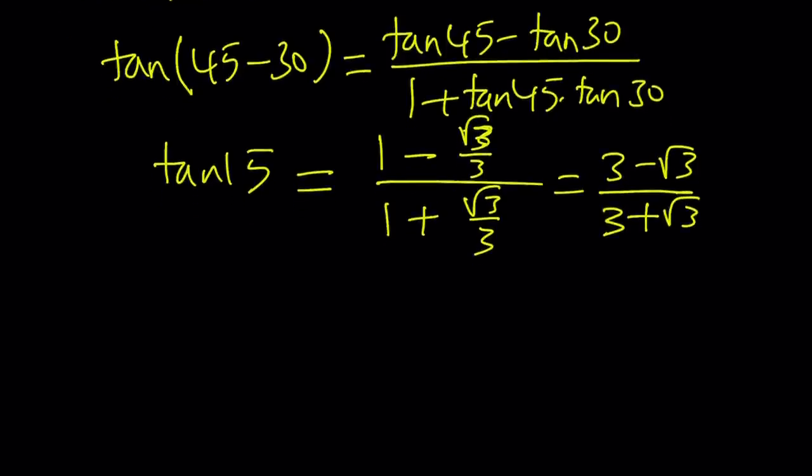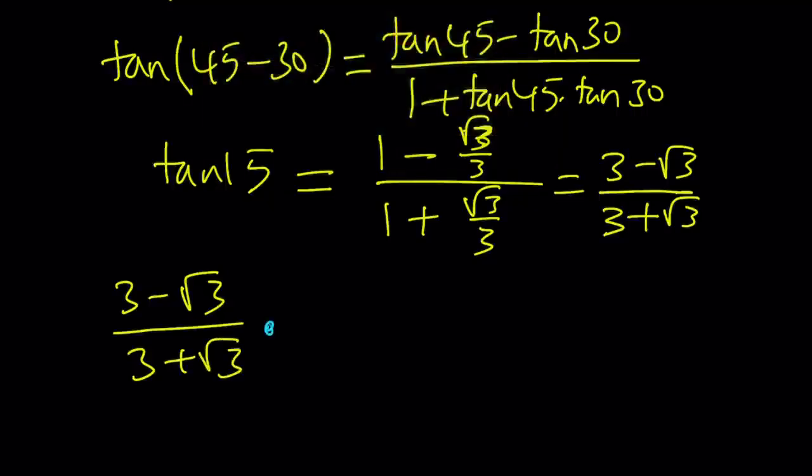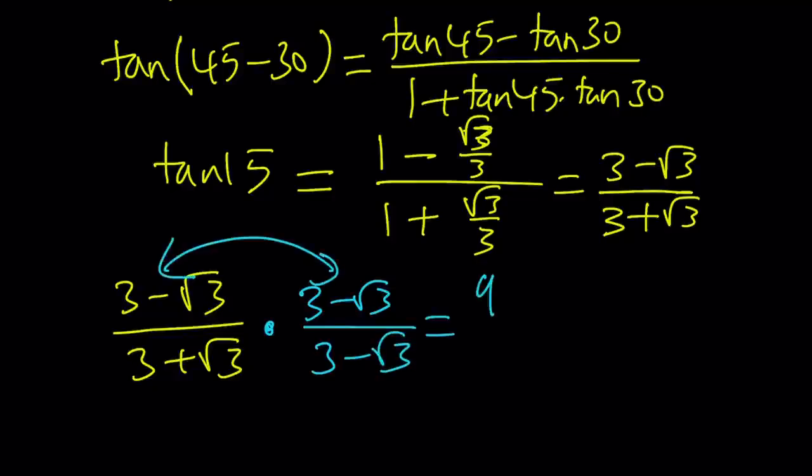Now, we're going to rationalize the denominator here. Let's go ahead and multiply this guy here by its conjugate, which is, you know, 3 minus root 3, the top and the bottom. The numerator becomes something squared, so it's going to be like 9 minus 6 root 3 plus 3 divided by 9 minus 3, which is, what is 9 minus 3? 6.